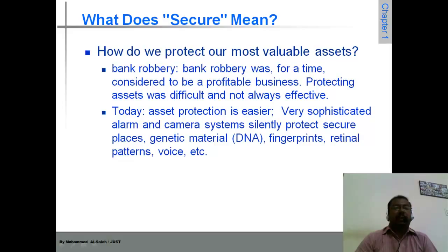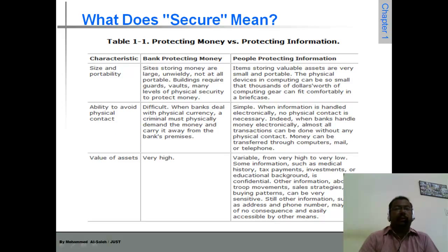This is by means of securing your account, by means of providing security, by giving alarms to security cameras or fingerprints, technical technicians, etc. If you see the power table, it gives a comparison between protecting money versus protecting information. The characteristics that are compared are size and portability, ability to avoid physical contact, and the value of assets.